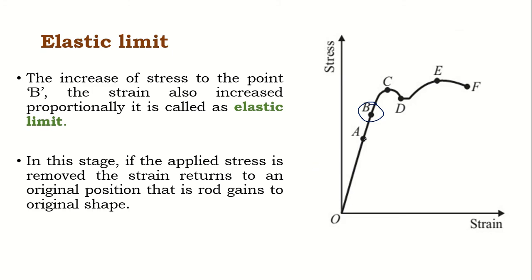Once you cross point A, the proportionality limit, and continue increasing the load, strain also increases up to point B, which is called the elastic limit. From A to B, stress is not proportional to strain, but the steel rod is still in its elastic zone. Point B is the elastic limit — even if you remove the load at point B, the material can return to its original position and the strain goes back to zero.